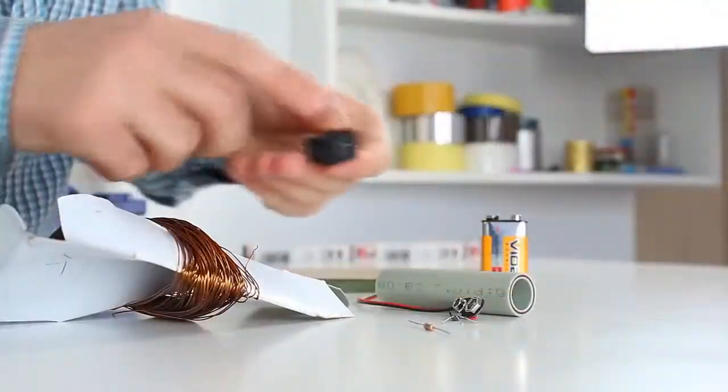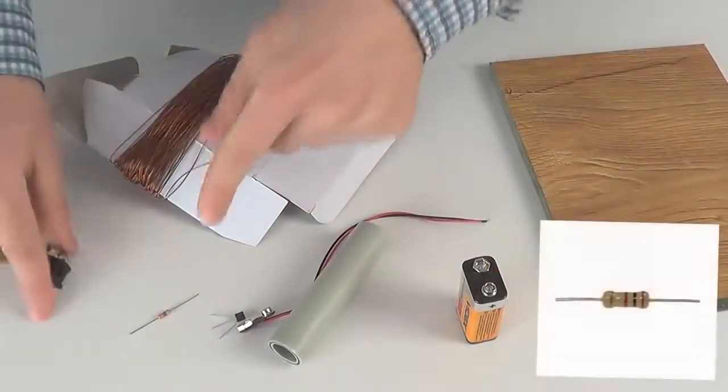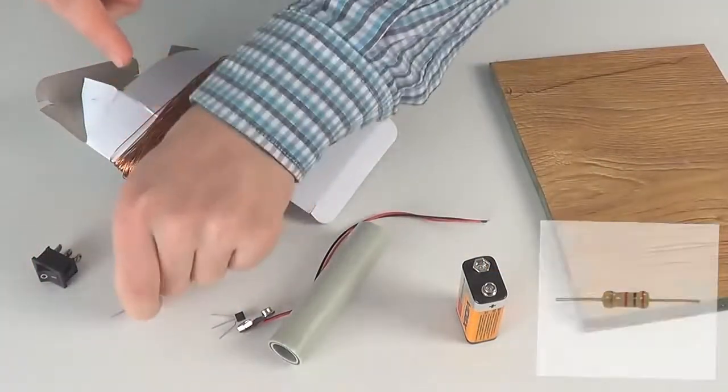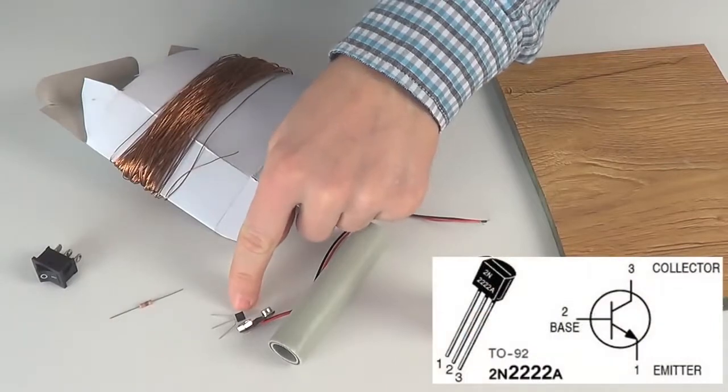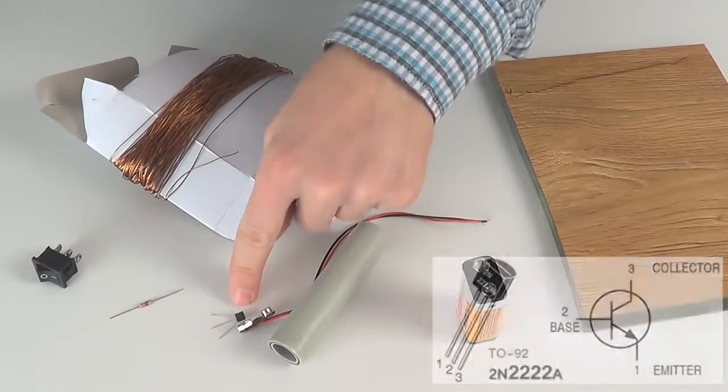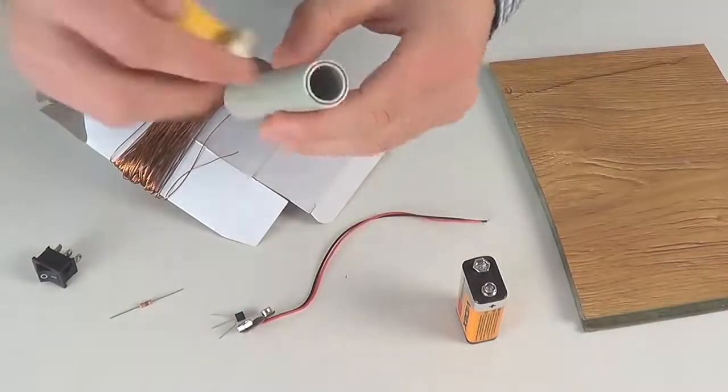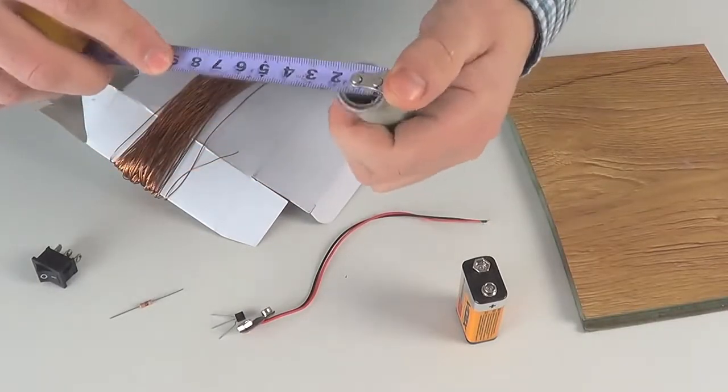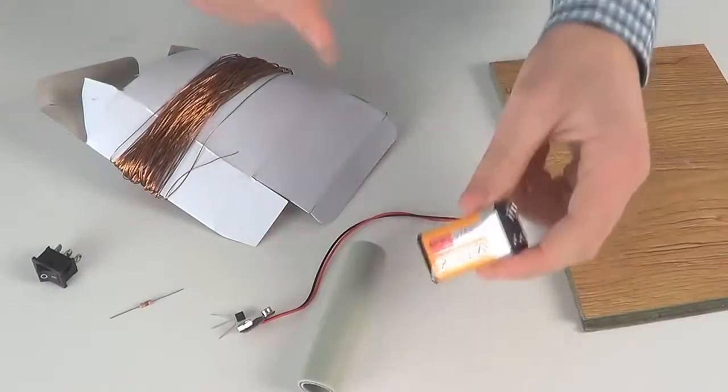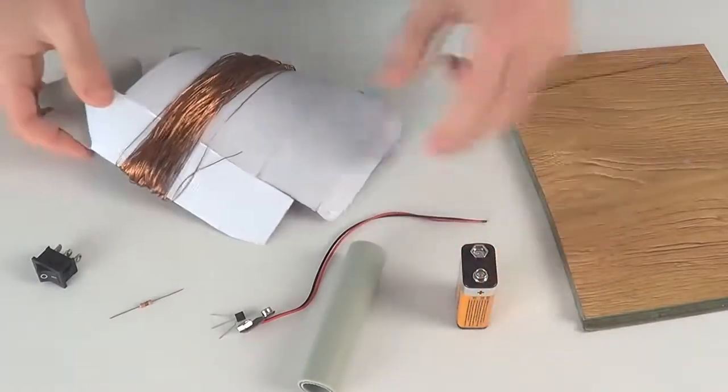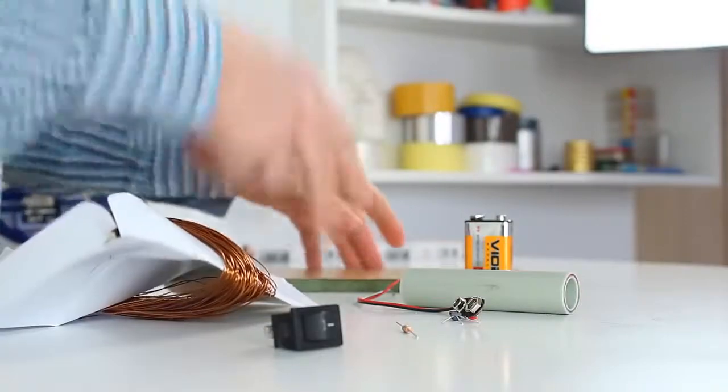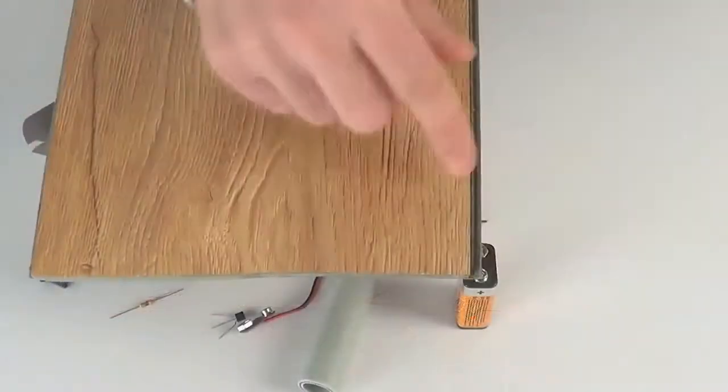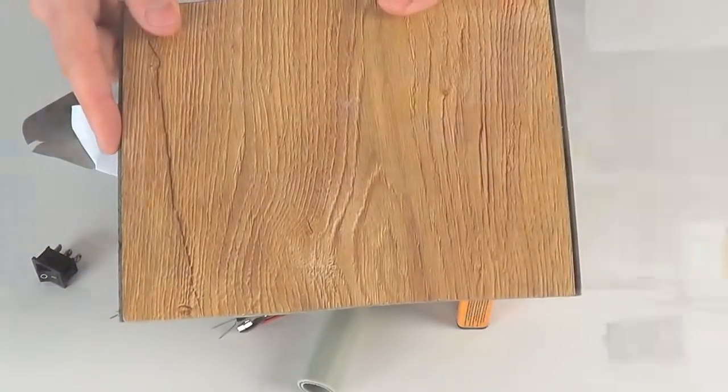In order to make a mini Tesla coil we need one switch, one 22 kOhm resistor and a 2N2222A transistor, a 9V battery connector, one PVC pipe 8.5 cm long and 2 cm in diameter. We also need a 9V battery, millimeter thick copper wire and a base on which we will install all of this. Ours is made of laminate.